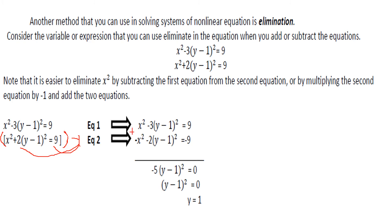When we add, because the signs are opposite — positive on top and negative on the bottom — x squared minus x squared equals 0. Then negative 3 times the quantity y minus 1 squared, minus 2 times the quantity y minus 1 squared gives negative 5 times the quantity y minus 1 squared. And 9 minus 9 equals 0.